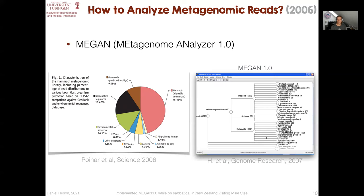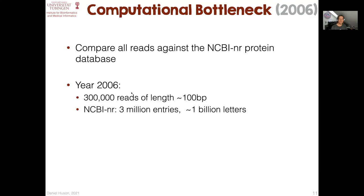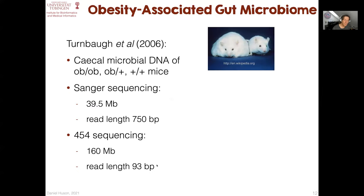Here's a MEGAN analysis of those 300,000 reads. The computational bottleneck back in those days — and for many years — was the alignment of the reads against the NR database. Back in 2006, datasets were very small: 300,000 reads, and the NCBI NR protein database only contained about three million entries, about one billion letters. Nevertheless, BLASTX of those sequences took a couple of weeks on a small cluster. Today, typical dataset sizes are a thousand times larger, and the NCBI database has grown by a factor of a hundred.